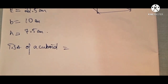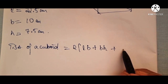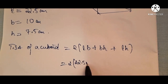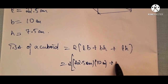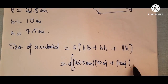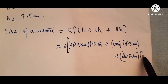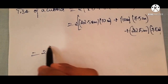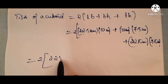The total surface area of a brick formula is 2 times (length × breadth + breadth × height + length × height). So: 2 times (22.5 × 10 + 10 × 7.5 + 22.5 × 7.5).